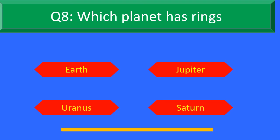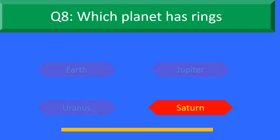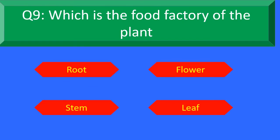And your time is up. The right answer is Option D: Saturn. Saturn is the planet that has rings. Moving to question number 9.